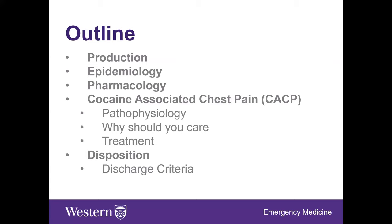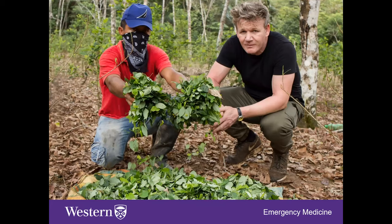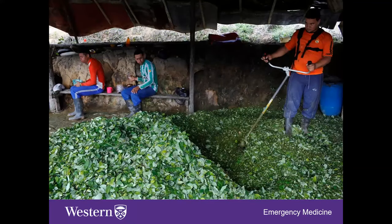First things first — we should learn how to make cocaine. As with all recipes I typically turn to Gordon Ramsay first; he made a documentary on cocaine production filmed in Colombia. The first step is to collect the coca plant, which grows mostly in the Andean-Amazonian region of South America. Next, you and your buddies chop up all the leaves into mulch using a weed whacker.